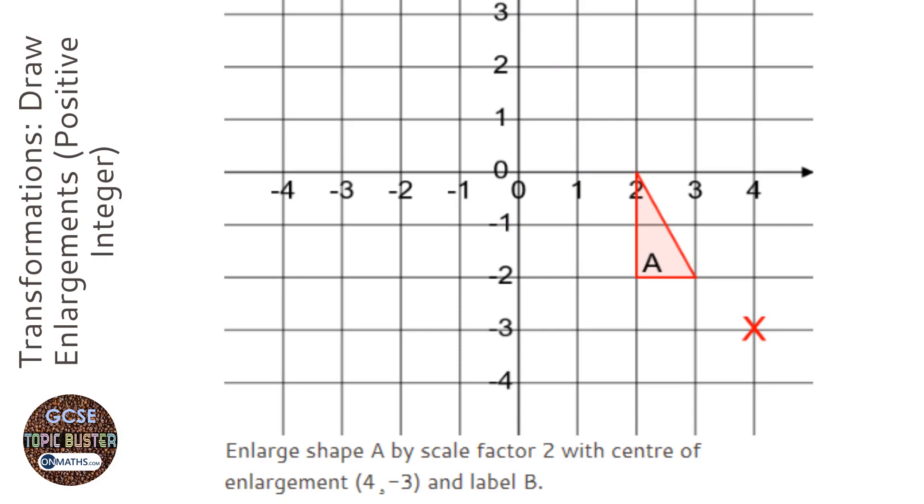I do it a slightly different way. What I need to do is find out how to get from the center of enlargement to each of those points. So I'm going to start at the center of enlargement, go to the bottom left on the shape. I'm going to jump 1, 2 to the left and 1 up.